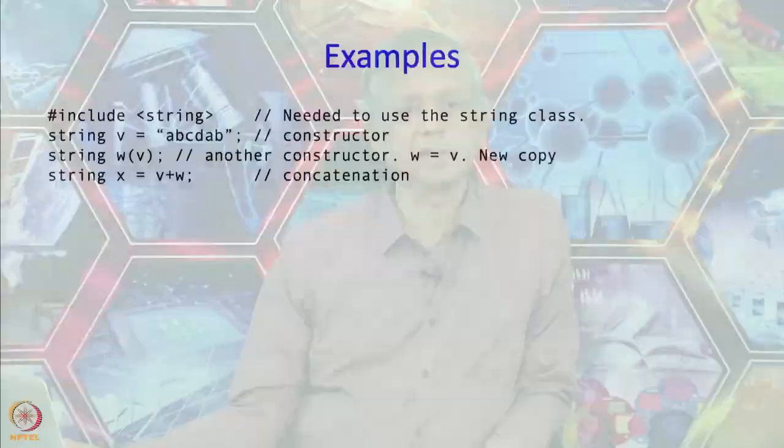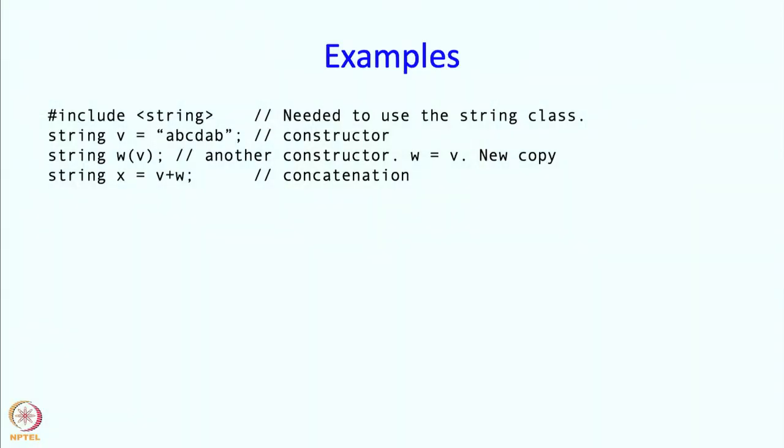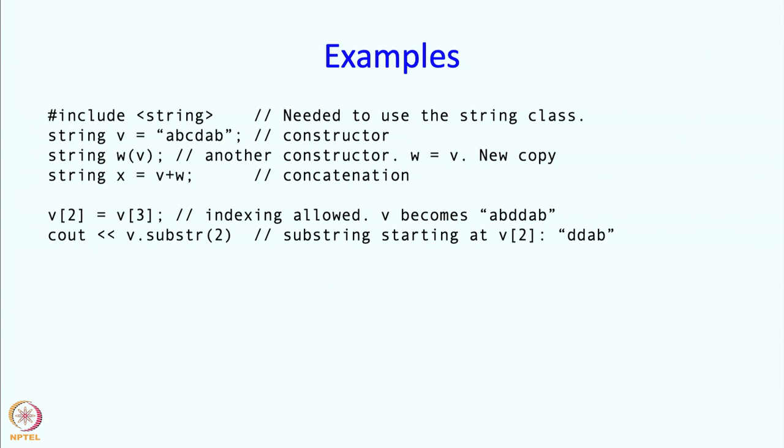I can write string x equal to v plus w. That is just concatenation and the concatenation is put into string x. I can index and the index operations can be on both sides. In this particular case v[2] is changing to v[3]. We had abcdab before so that will now become abddab.